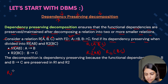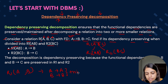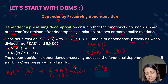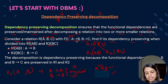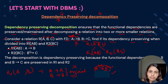Coming to the first relation R1, which has attributes A and B. The functional dependencies we can form are: A can determine itself, B can determine itself — these are trivial dependencies by reflexivity. A can also determine B. Since trivial dependencies always hold, we don't need to consider them. Checking non-trivial dependencies: A→B is present before the decomposition and also after the decomposition, so it is preserved.